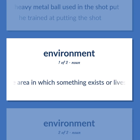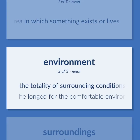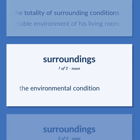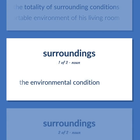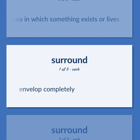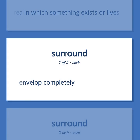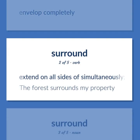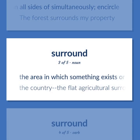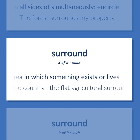Environment: The area in which something exists or lives. The totality of surrounding conditions. He longed for the comfortable environment of his living room. The environmental condition. Surround: The area in which something exists or lives. Envelop completely. Extend on all sides of simultaneously and circle. The forest surrounds my property. The area in which something exists or lives. The flat agricultural surround.